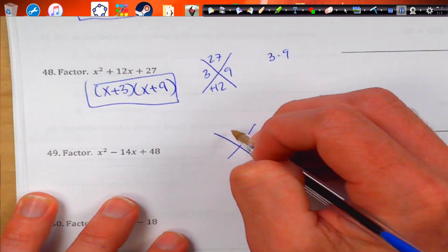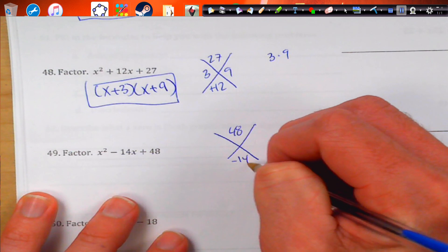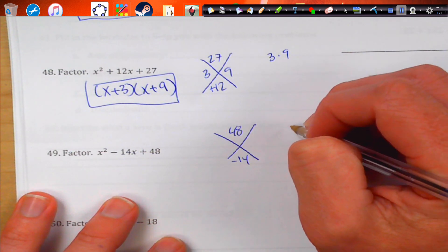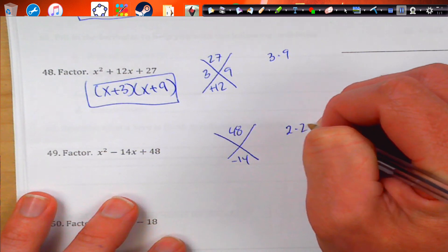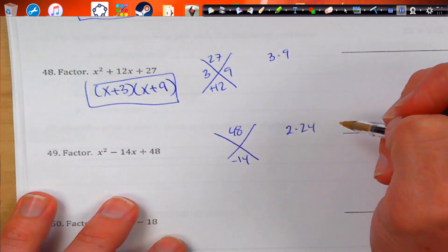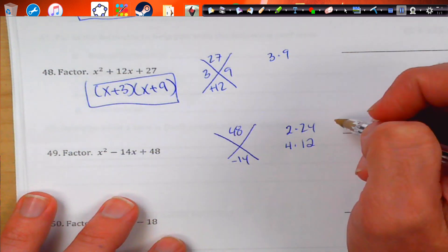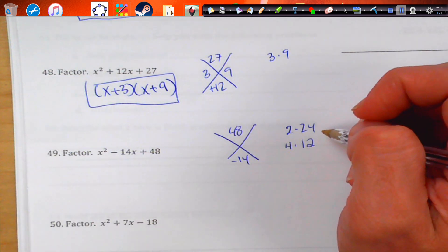And 48 and negative 14. So, let me begin. Let's see. 2 times 24. 4 times 12. Let's see. What else would go into this?